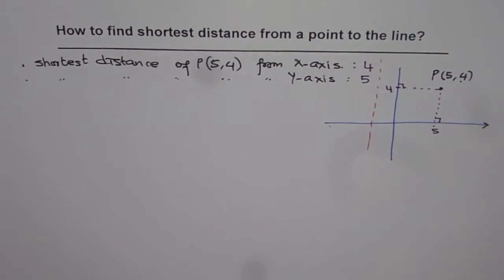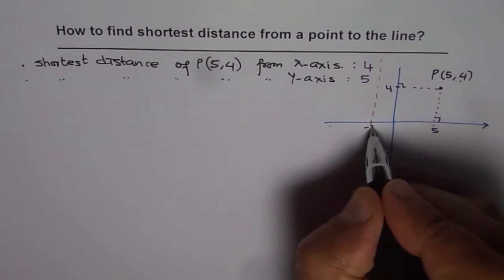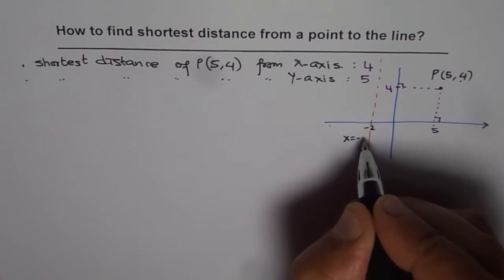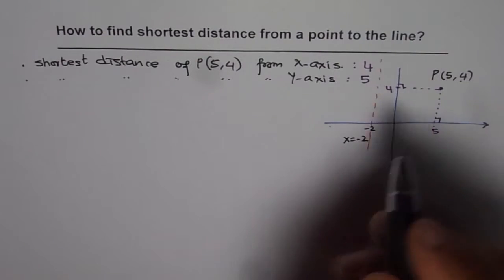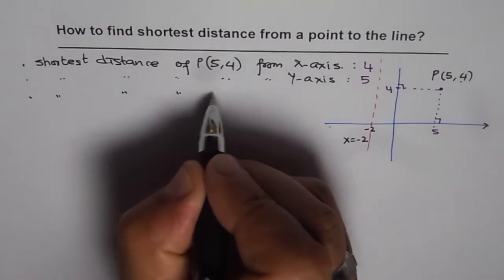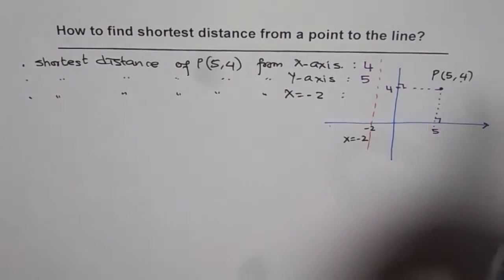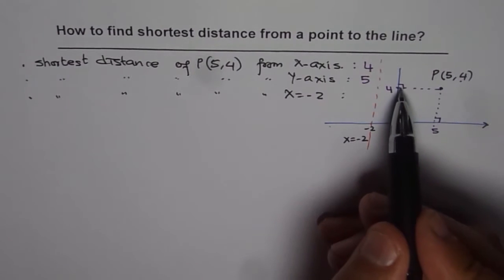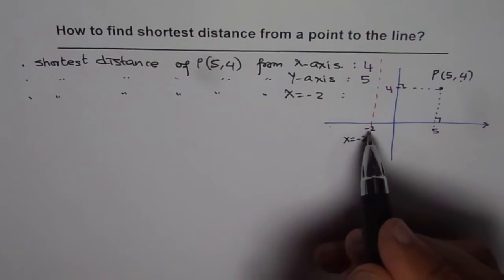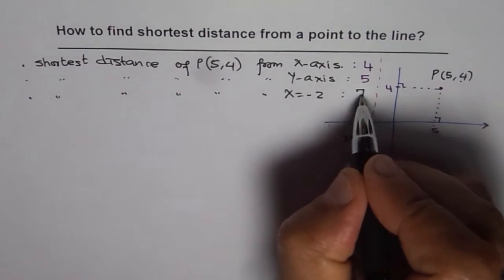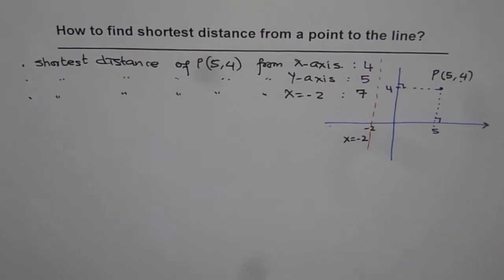If I have a line here, let us say x equals to minus 2. The shortest distance of this point from x equals to minus 2 should be the horizontal distance — 5 plus 2 units — which gives us the answer as 7. As far as the distance is concerned, the shortest distance from a horizontal or vertical line is simple; you can easily find it as we did here.